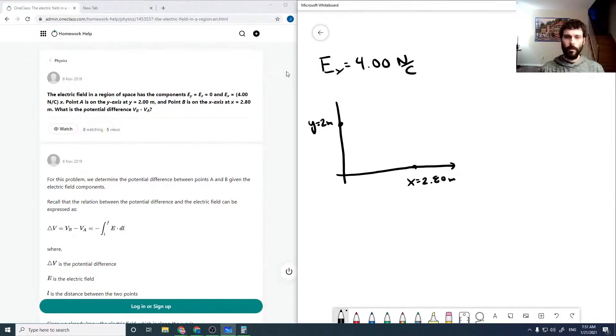And it wants to know in moving from A to B, what is our delta V, which is V_B minus V_A.